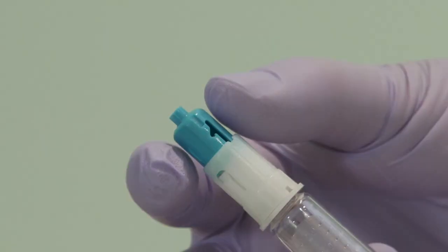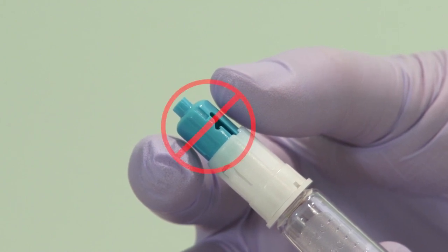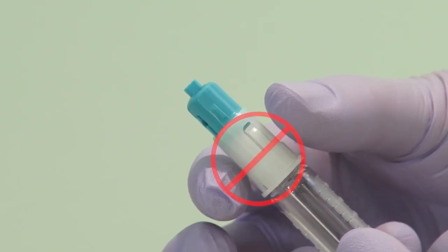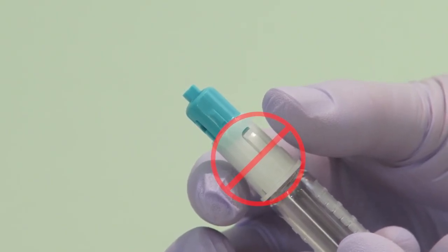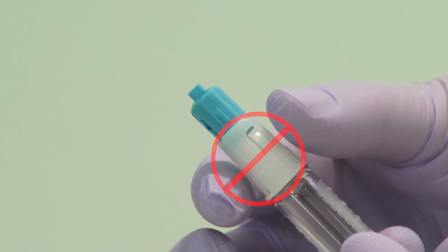Do not twist on the safety shield at any time. For your safety, do not grasp or twist on the colored safety shield or the lower white barrel of the safety pen needle at any time to prevent damage to the safety mechanism and to prevent a needle stick.